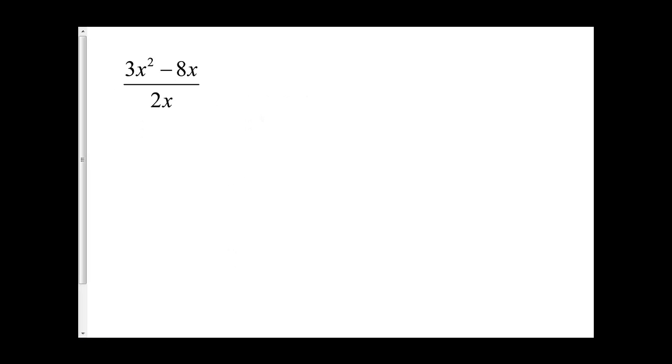With a more complicated question, the first thing I'm going to have to look for is, can I factor either the top or the bottom? In this example, if I look at 3x squared and 8x, I can factor an x out of both terms. And I'm left with 3x minus 8.